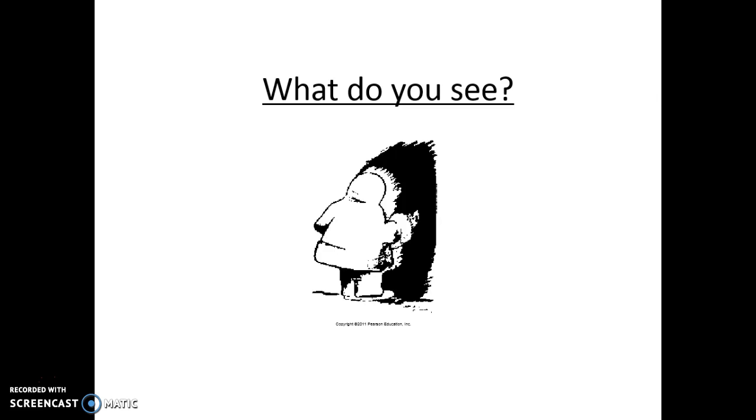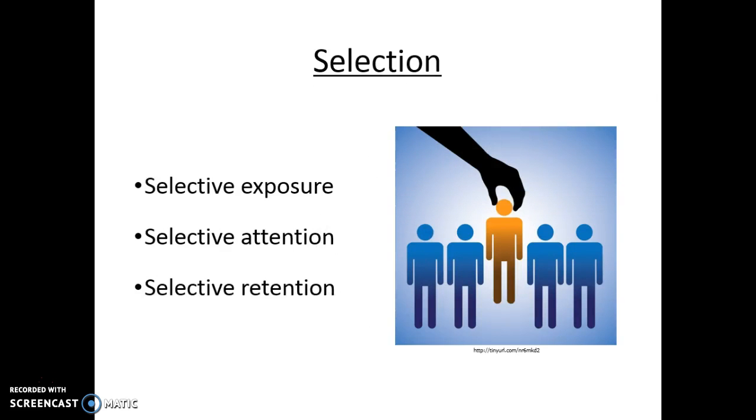It all starts off with selection. Selection is really just noticing something different in our environment with one of our five senses. Maybe your sense of smell—you smell cookies in your kitchen—or maybe you can see some bright red ball in the distance.